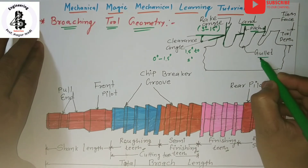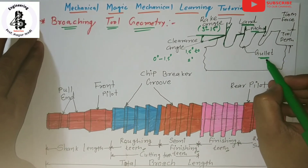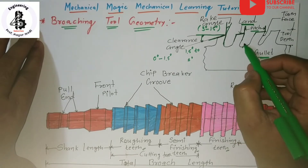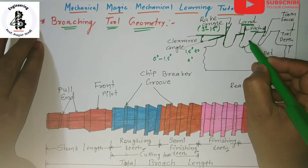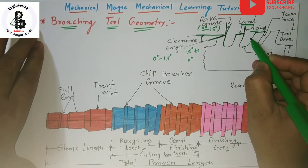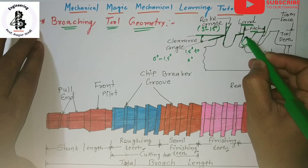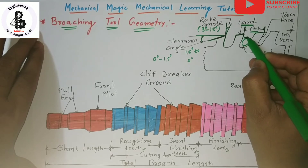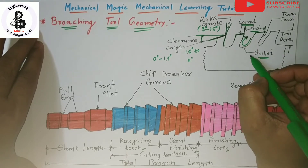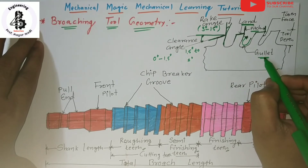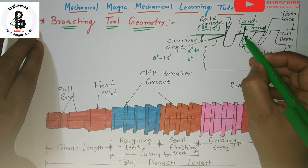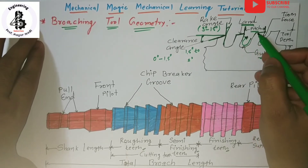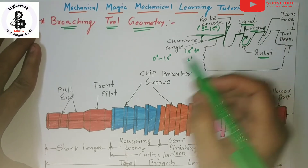The next part is the gullet. The application of the gullet is to provide space for the chip or curl to escape. The cut portion of the chip will curl, so the gullet provides a curvature that helps the chip escape from the broaching tool.